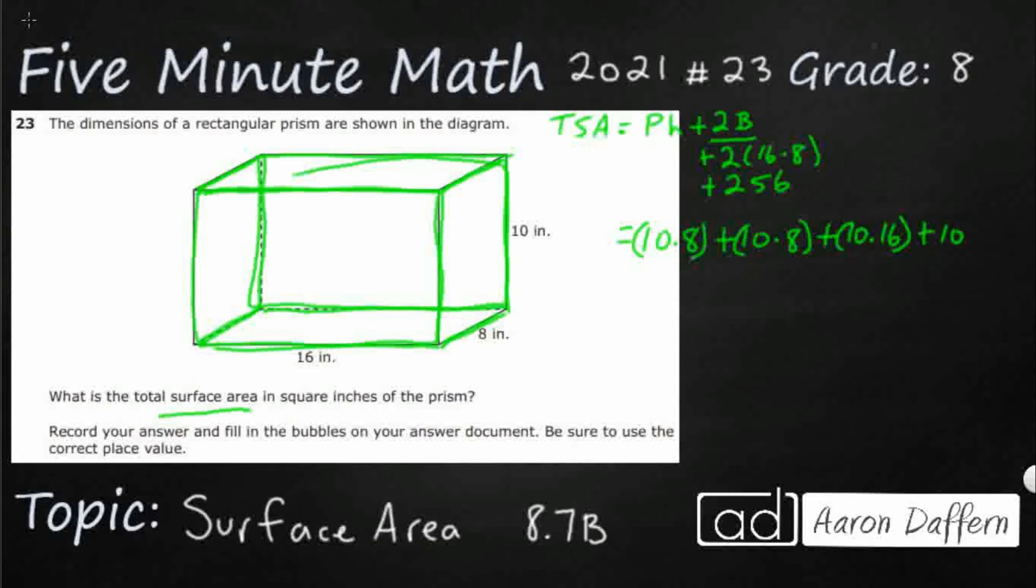If I get those four and add them up, I can add that to my 256 and I'll have all six faces. Take a look at what's common here: 10, 10, 10, 10. So you can actually factor out that 10, and you can leave what's left: 8 plus 8 plus 16 plus 16.